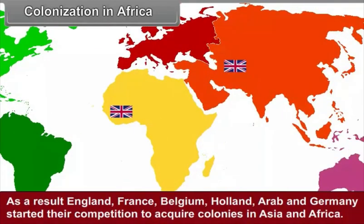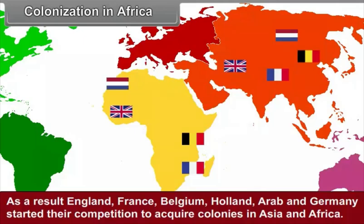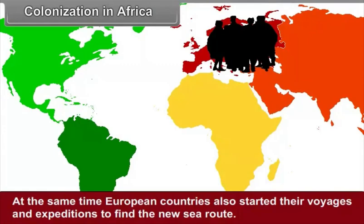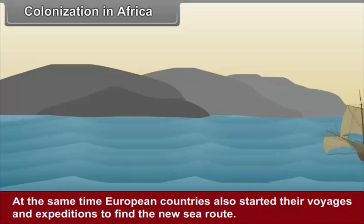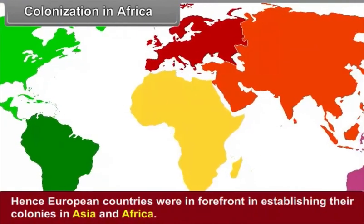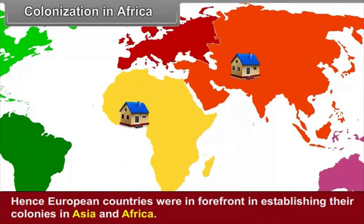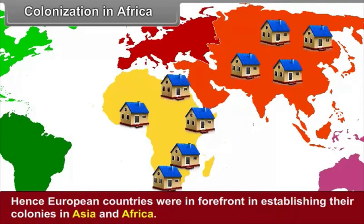As a result, England, France, Belgium, Holland, Arab and Germany started their competition to acquire colonies in Asia and Africa. At the same time, European countries also started their voyages and expeditions to find new sea routes. Hence, European countries were in the forefront in establishing their colonies in Asia and Africa.